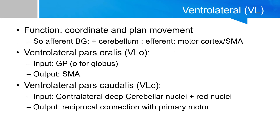The VA and VL nuclei are often grouped together due to their functional similarities. The ventral lateral nucleus also functions to coordinate and plan movements, with pathways connecting to the basal ganglia, substantia nigra, and motor cortex. The key difference is that the ventral anterior usually projects to the premotor cortex, whereas the ventral lateral projects to the primary motor cortex. The VL nucleus also connects to the cerebellum and the red nucleus.